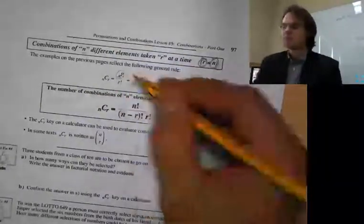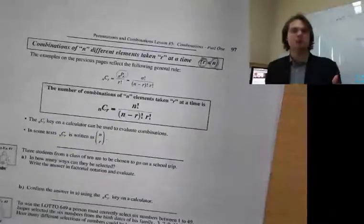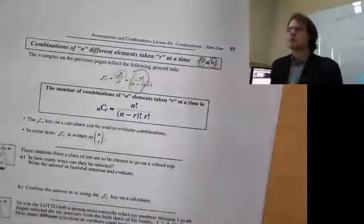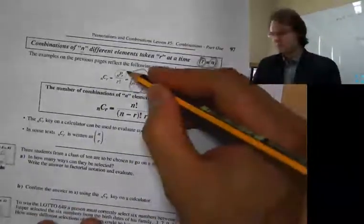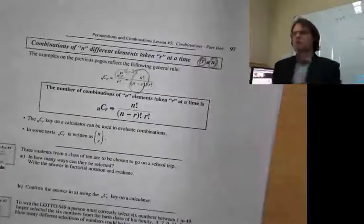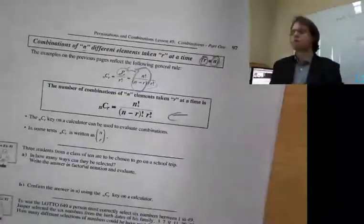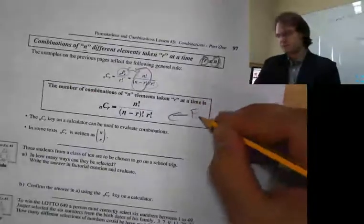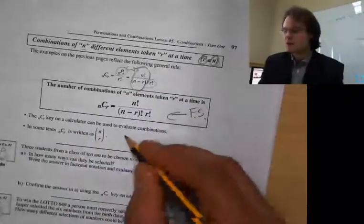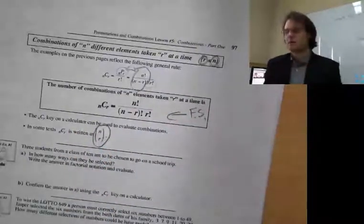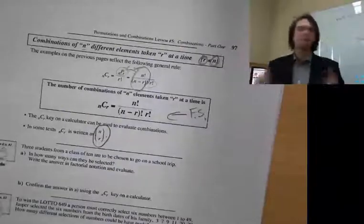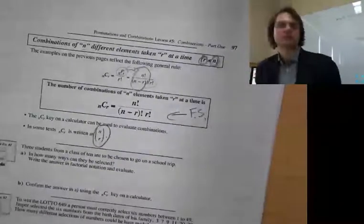Combination is like a permutation except order doesn't matter, so we have to divide by that order. Here's your formula for permutation divided by r factorial — that's the combination formula you get on your formula sheet. Some texts will also write it in a different notation, so just know both represent a combination.